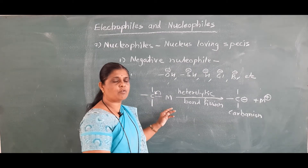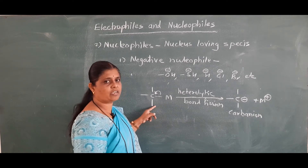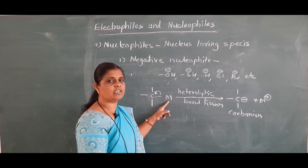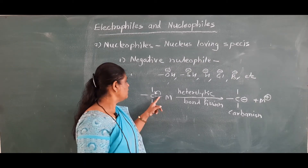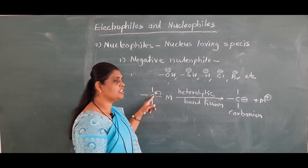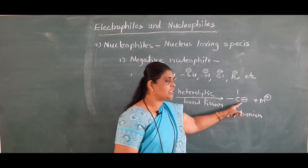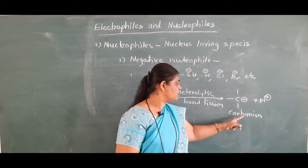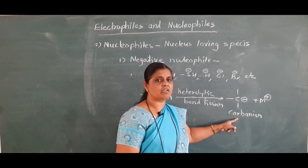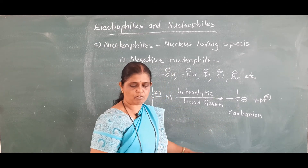Nucleophiles are obtained with the help of heterolytic bond fission. Suppose this is any organic compound in which carbon is attached to a less electronegative atom. During heterolytic bond fission, the shared electron pair is shifted towards the carbon atom, and therefore carbon carries negative charge. Such a species is known as carbanion. Carbon carrying negative charge is known as carbanion. Thus, nucleophiles are obtained by heterolytic bond fission.